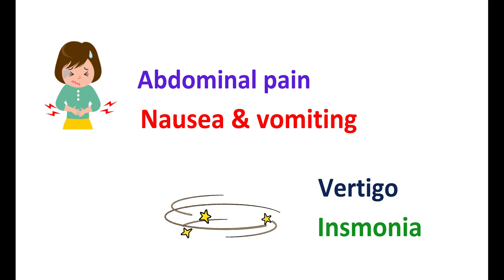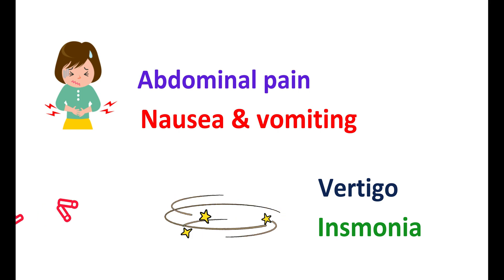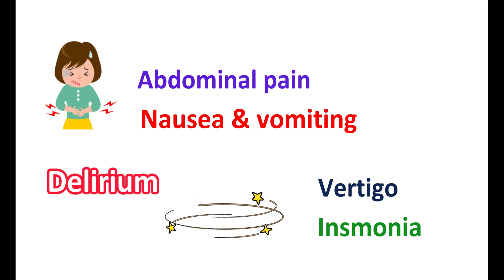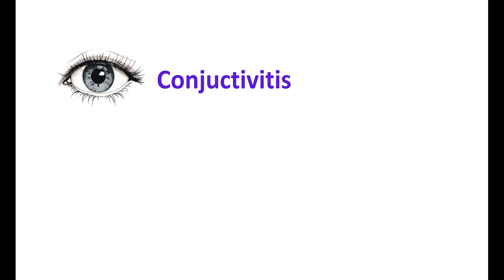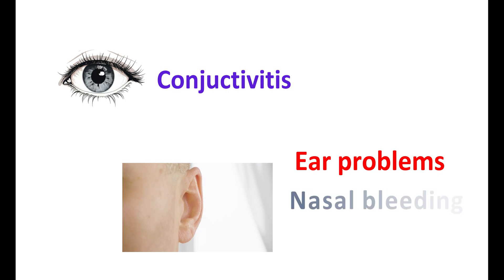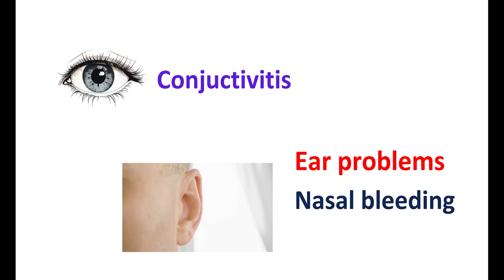In a few people, oseltamivir may produce abnormal mental conditions like confusion, disorientation, and abnormal thinking. These side effects may indicate a state of delirium, which is a serious side effect, and in such conditions this medication may be discontinued. Use of oseltamivir can also produce conjunctivitis and ear problems, which may result in vertigo and lightheadedness. It can also cause nasal bleeding.